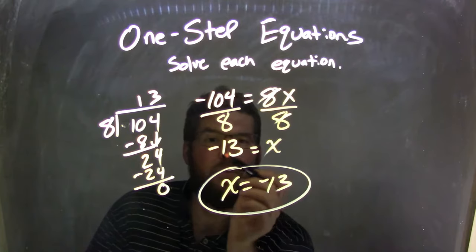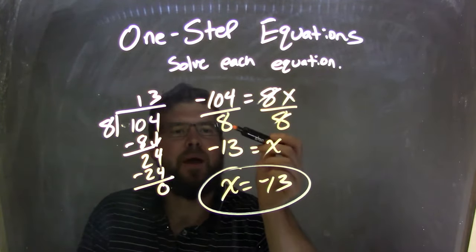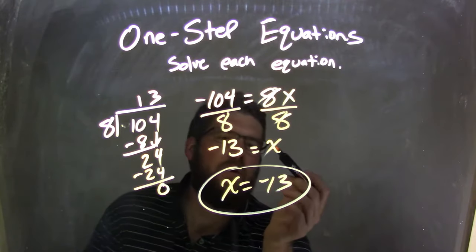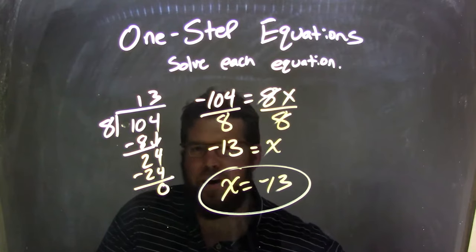So we have negative 13 equals x. Why was it negative? Because we started with a negative 104. A negative divided by a positive is still a negative. Well, I rearranged it to write it nicely to be x equals negative 13, which is our final answer.